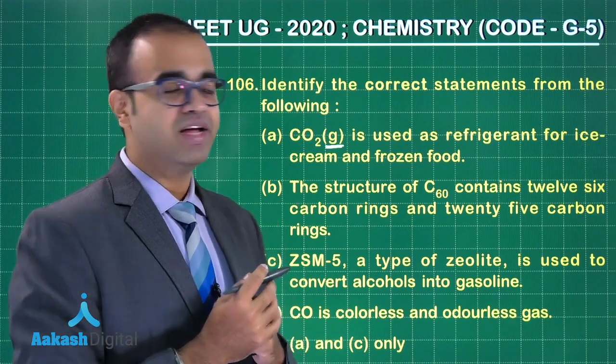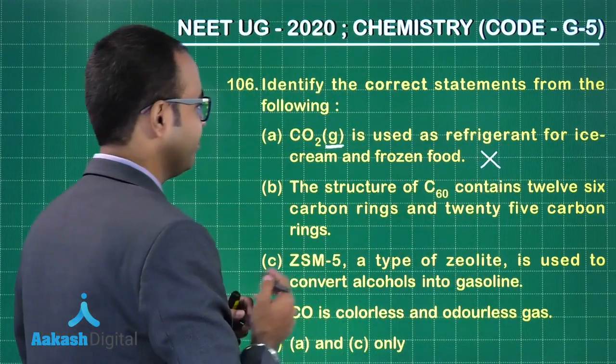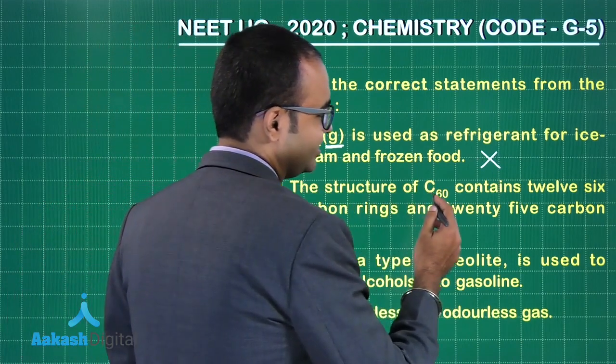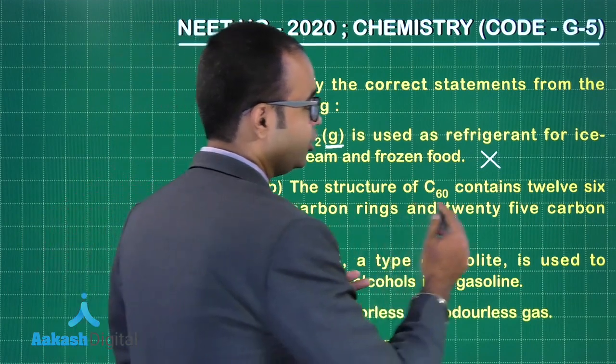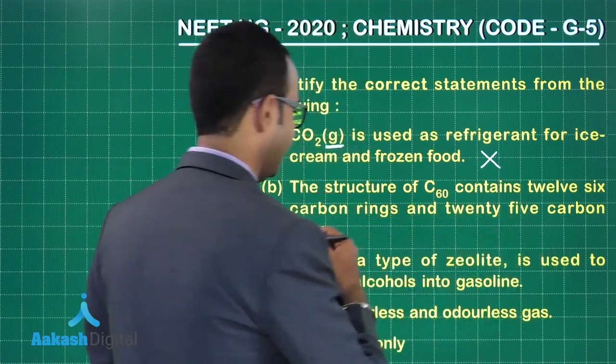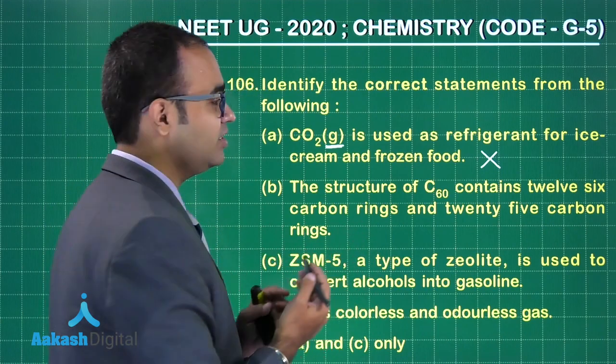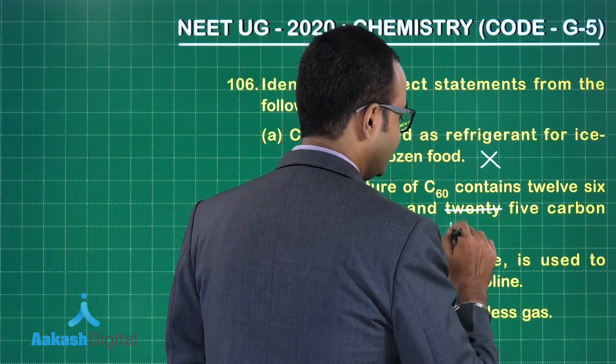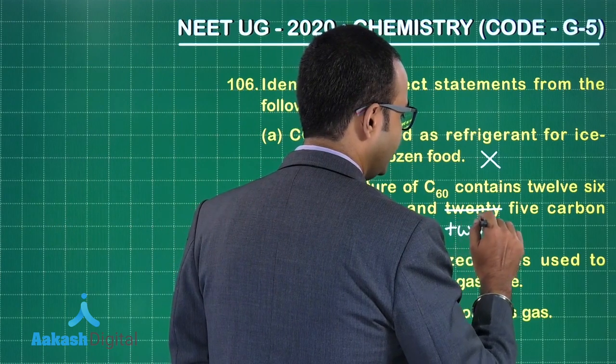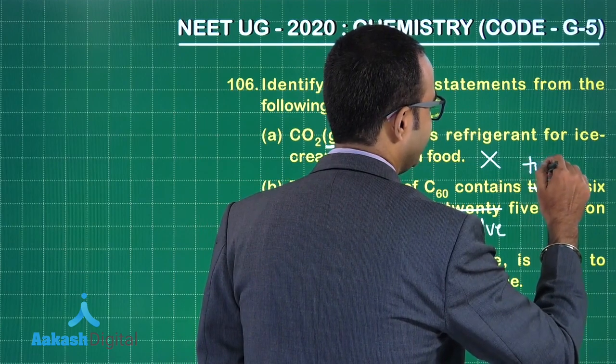Second statement: the structure of C60 contains twelve six-carbon rings and twenty-five carbon rings. Is this statement correct? I don't think so, because this is 20, so this should be 12. This is 12, this should be 20, right? So the second statement is also not correct. Let us look at the third and fourth statement.